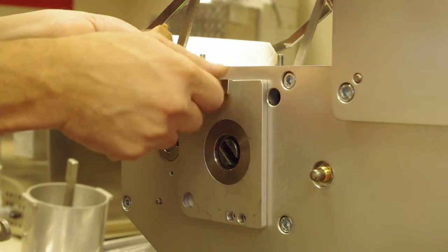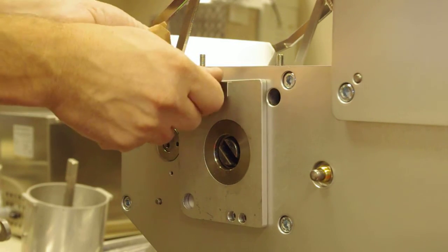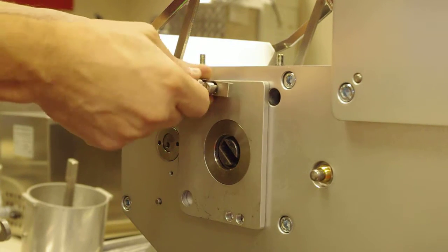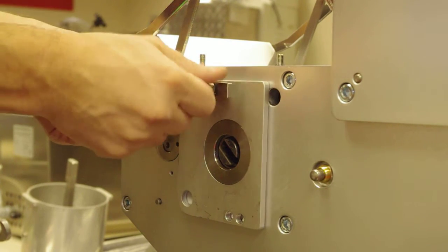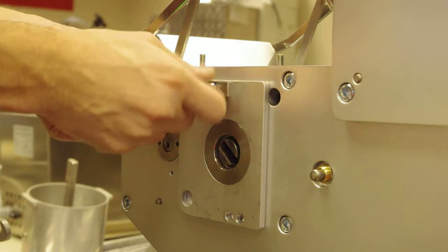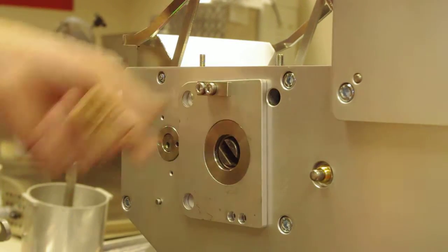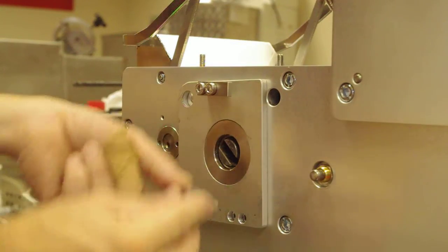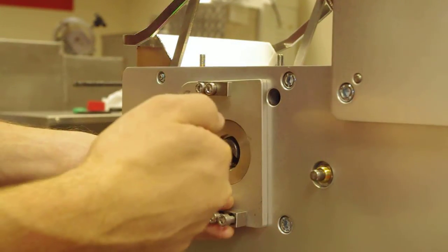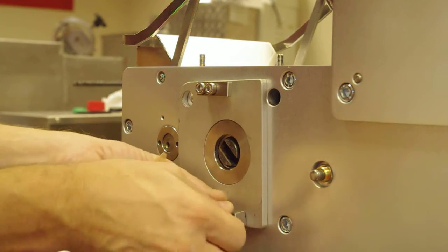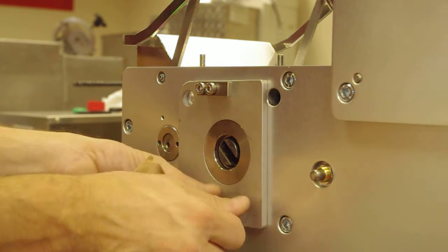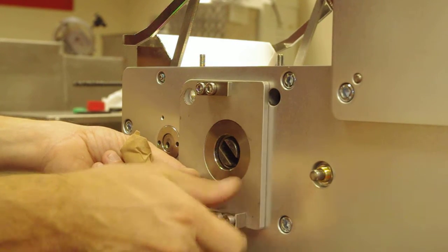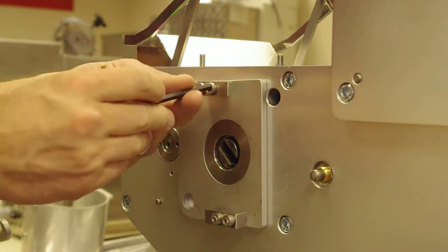These pieces just get screwed in. This one faces that way and this one faces to the left. Again, use an allen wrench to tighten them down.